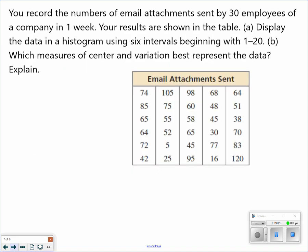Record the number of emailed attachments by 30 employees. Results are shown in the table. Display your histogram using six intervals. The first interval is 1 to 20. So 1 to 20. Now remember, you're always going to have a 19.